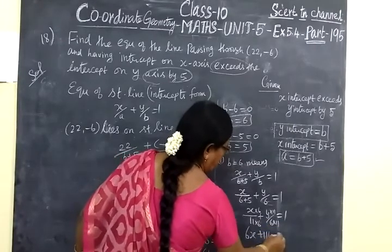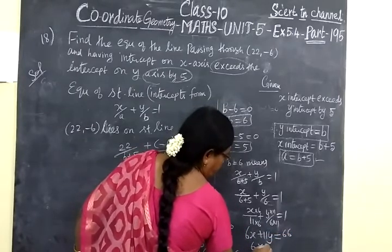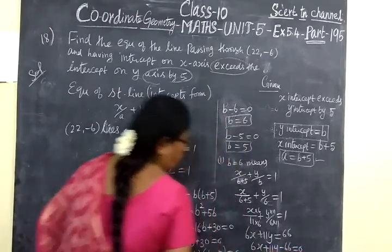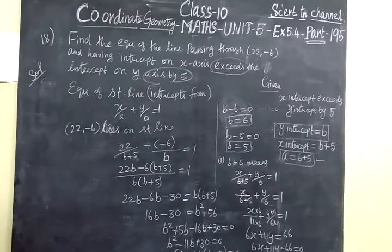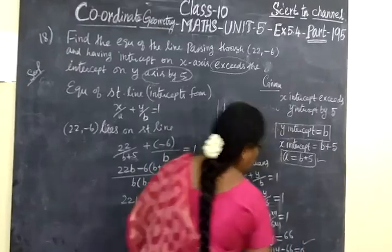Bringing everything to one side: 6x plus 11y minus 66 equals 0. This is one set of answers.